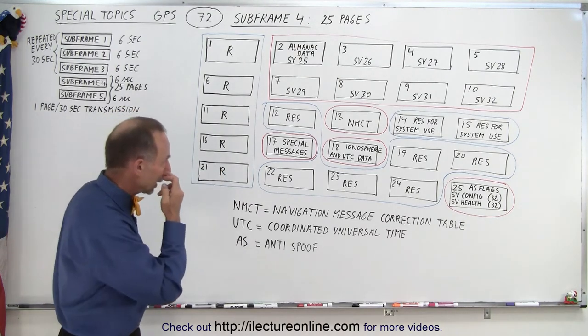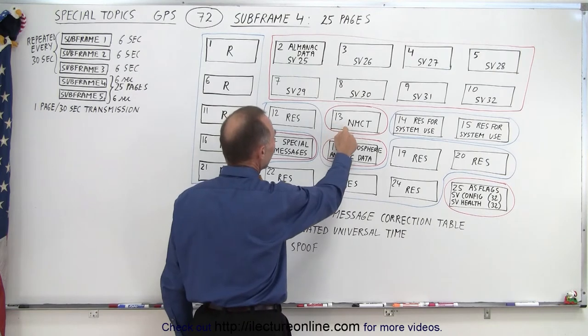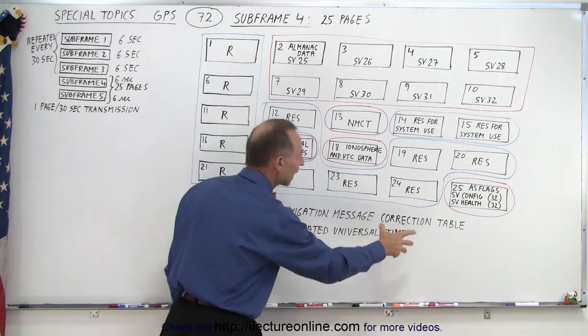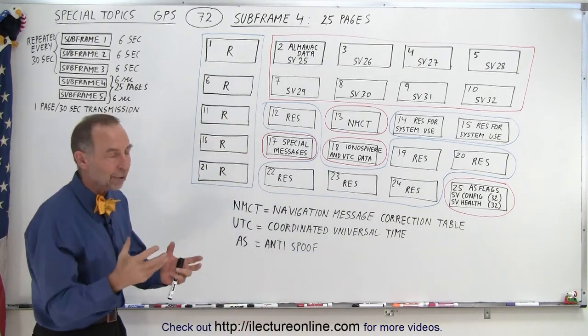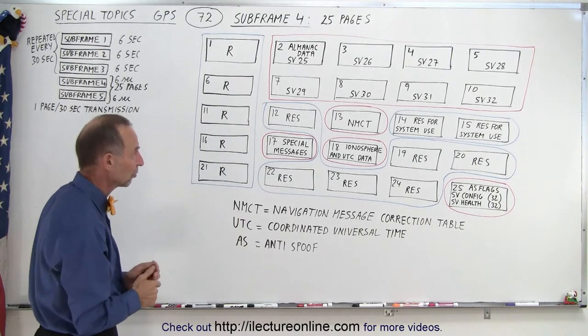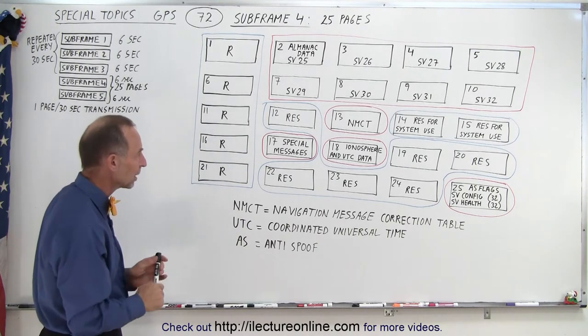What else do we have in there? Well we have page 13 which has an NMCT. NMCT stands for navigation message correction table. So that contains parameters to make corrections to the orbital parameters and we have a table of those corrections in there and we'll take a look at that in more detail.